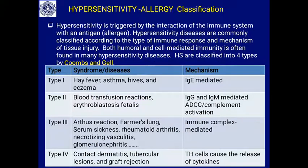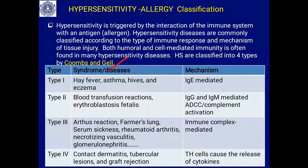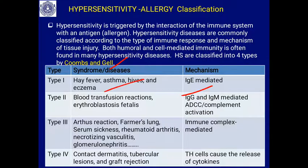Hypersensitivity is triggered by the interaction of the immune system with an allergen. Hypersensitivity diseases are commonly classified according to the type of immune response and mechanism of tissue injury. Both humoral and cell-mediated immunity are found in hypersensitivity-related diseases. Hypersensitivity is classified into four types — this is the classification of Coombs and Gell. Type 1 is IgE-mediated, causing hay fever, dermatitis, allergic asthma, hives, eczema, and skin rashes.